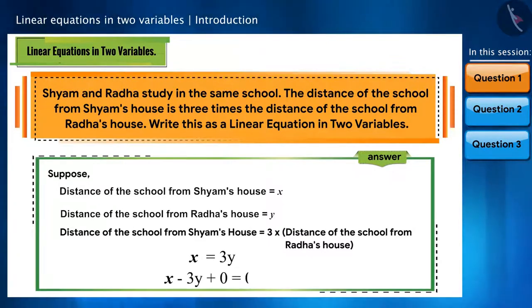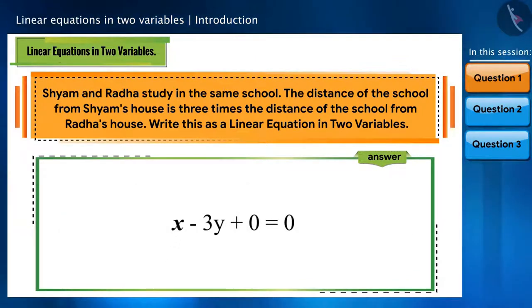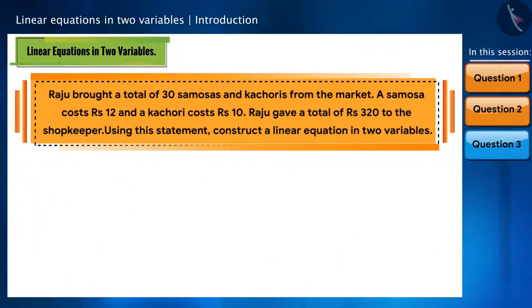Let's see another question. Raju brought a total of 30 samosas and kachoris from the market. A samosa costs rupees 12 and a kachori costs rupees 10. Raju gave a total of rupees 320 to the shopkeeper. Using this statement, construct a linear equation in two variables.